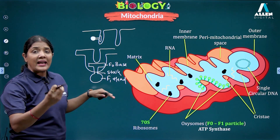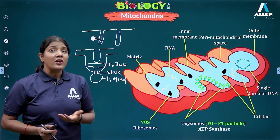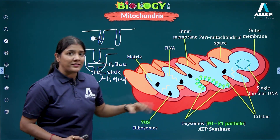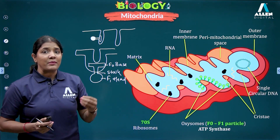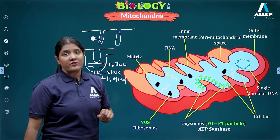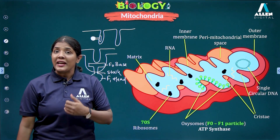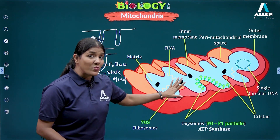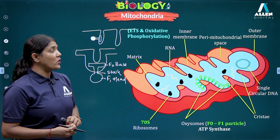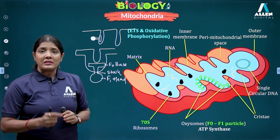The F1 head contains an enzyme called ATP synthase. Since enzymatic reactions require a fluid-based medium, the F1 head faces towards the matrix — which provides that fluid environment. ATP synthase, as the name suggests, helps in the synthesis of ATP, which is the energy currency of the cell. This is one of the key reasons why mitochondria is called the powerhouse of the cell.